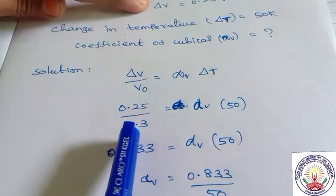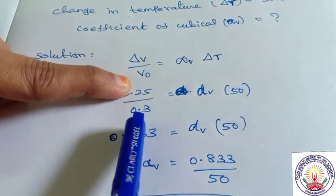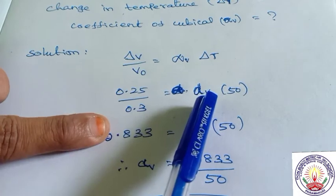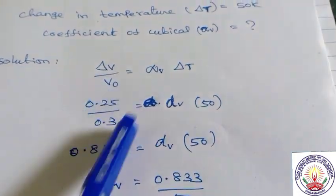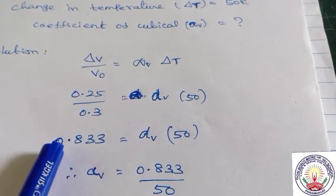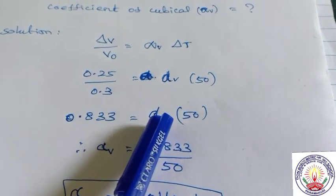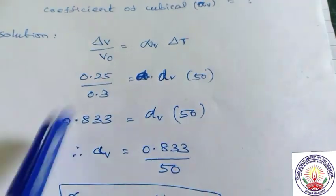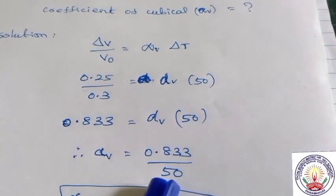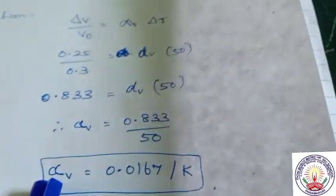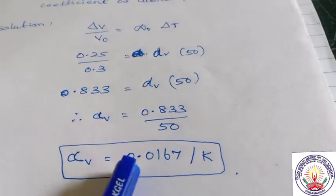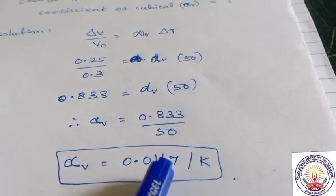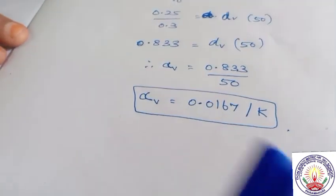Delta V is 0.25 and initial volume is 0.3, delta T is 50. Dividing: 0.25 divided by 0.3 divided by 50 gives 0.833 divided by 50. So alpha, the coefficient of cubical expansion, equals 0.0167 per Kelvin. Thank you students.